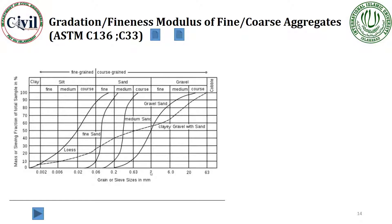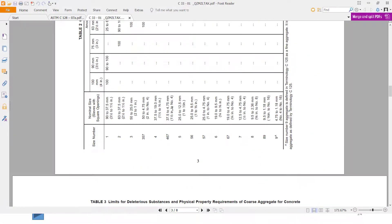For sand, particle size is less than 4.75 mm, and above 4.75 mm it will be gravel or coarse aggregate. According to ASTM C33 specifications, coarse aggregate is defined as material retained on the number 4 sieve (4.75 mm), while fine aggregate passes through the number 4 sieve.